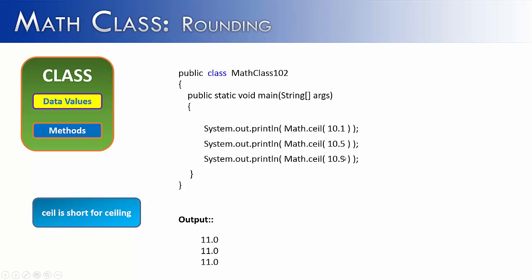No matter what this number is over here, as long as it's 0.1 or greater, it is going to give us the next whole number, which is 11 in this case. And notice, just like floor, ceil returns a double value as opposed to an integer value.